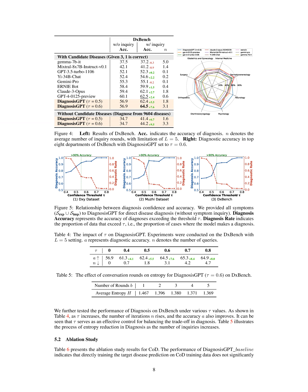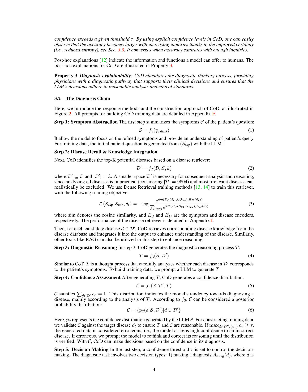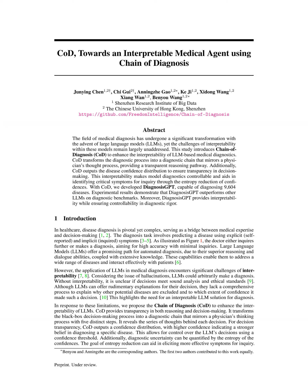Step 5 — Decision Making: The final step involves making a diagnosis or inquiring about additional symptoms based on the confidence levels. A confidence threshold is applied to control the decision-making process, balancing the trade-off between accuracy and the number of inquiries, ultimately guiding the model towards a reliable diagnosis.